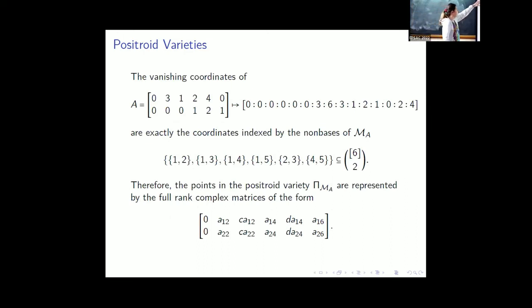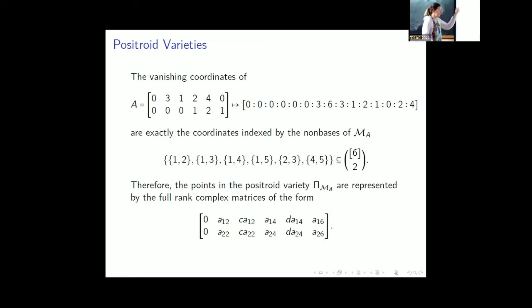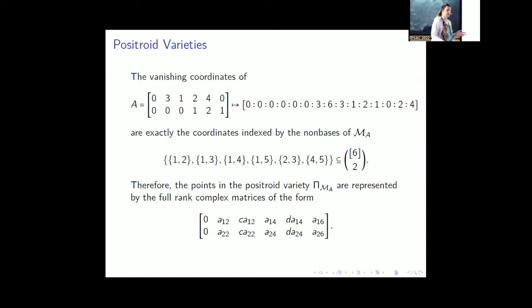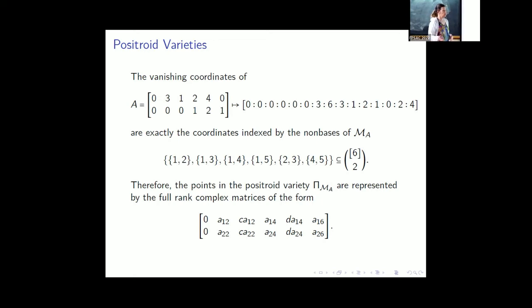Going back to the example: we had matrix A with all its Plücker coordinates. The zeros occur where the Plucker coordinates vanish. The positroid variety is the collection of all 2×6 matrices where you have zeros in the first column, the second column is arbitrary, the third column is linearly dependent on the second, the fourth column can be anything, the fifth column is linearly dependent on the fourth, and the sixth column can be anything. Those are the constraints defining this positroid variety.